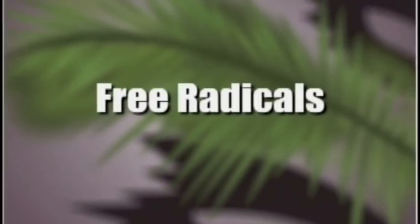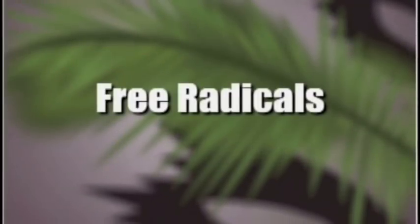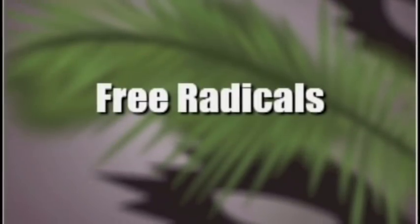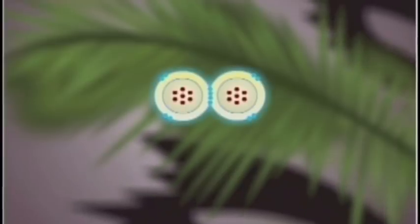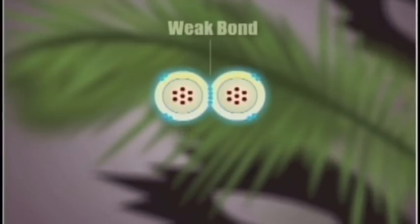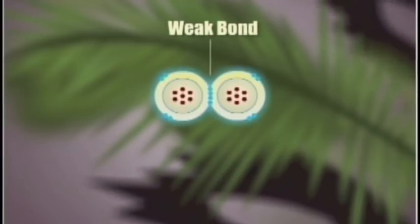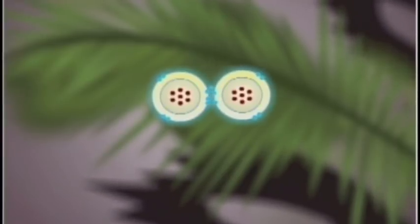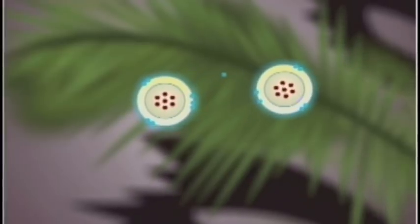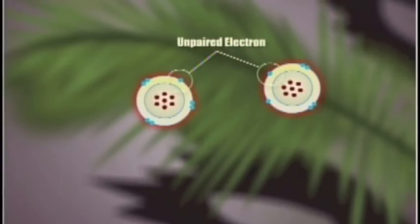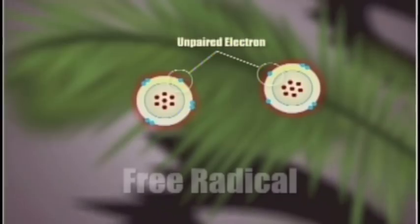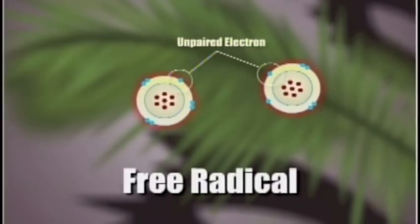Our bodies are comprised of billions of molecular cells held together by electronic bonds. Sometimes these molecules are held together by a weak bond and can split apart, resulting in an unstable molecule with an unpaired electron. This molecule is known as a free radical.